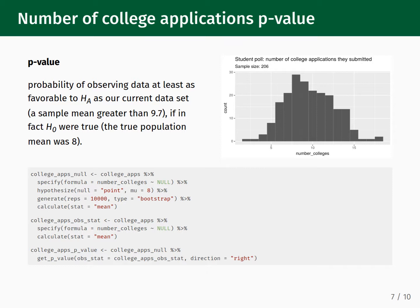Running this code will simulate our null distribution. Once we have the null distribution, we can calculate the p-value. To do this, we first need the average value of the number_colleges column — we know this value is 9.7, but if we did not, we can easily calculate it by taking the college_apps_null code and removing the hypothesize and generate lines. We store the result in college_apps_obs_stat. Now we finally calculate the p-value. We pipe the results of our simulation, college_apps_null, into the get_p_value function. We set the obs_stat keyword equal to college_apps_obs_stat and set the direction keyword equal to right, which means we are only looking for simulated results that are larger than 9.7.